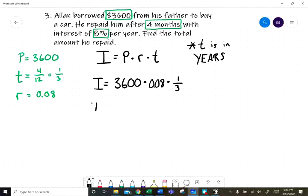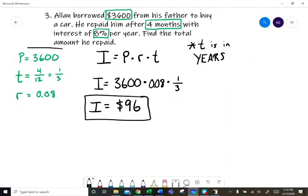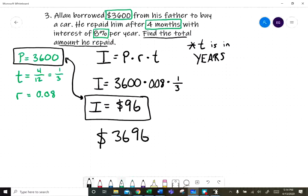Our interest is $96. So you're paying back the original $3600 plus the interest. Find the total amount he repaid. The total amount should be $3696.